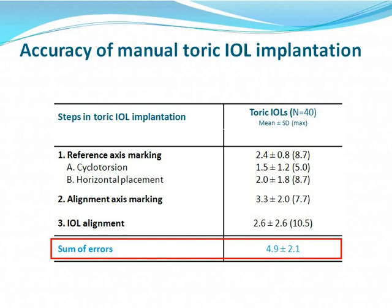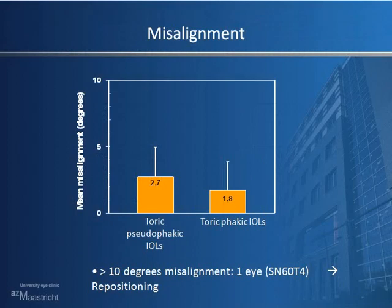If you look at the sum of errors, this is an average of around 5 degrees, but there can be a deviation as high as 10 degrees. From the last two weeks we have pooled our data to see what we could do with this system as a first evaluation. We included toric phakic IOLs and toric pseudophakic lenses. For the phakic lens, where there can be no post-operative rotation, the error of alignment was very low — a mean of 1.8 degrees. For the toric pseudophakic IOLs, we had 2.7 degrees, which is on average 2.5 degrees lower than with our manual marking.